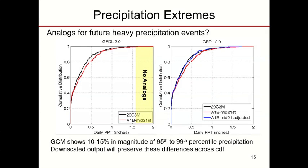The same issue holds for precipitation — there may be no appropriate analogs for future heavy precipitation events. Looking at the GFDL model for daily precipitation in January, we can see significant increases in heavy precipitation events. These are adjusted, and we preserve the raw features of the GCM. The GCMs show a 10% to 15% increase in the magnitude of the 95th to 99th percentile precipitation events, and the downscaled output preserves these differences across the cumulative distribution.